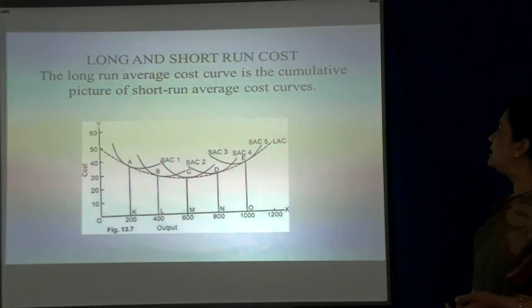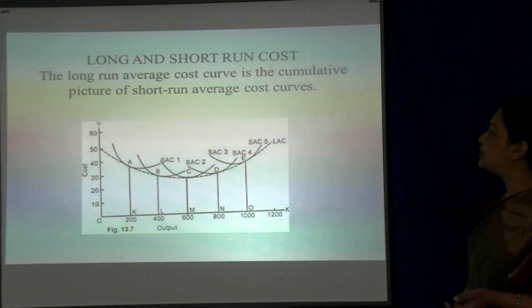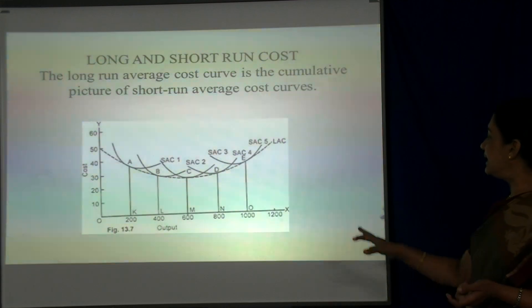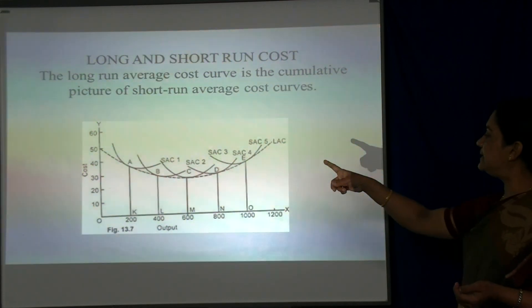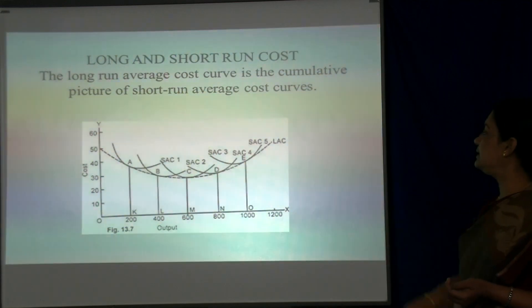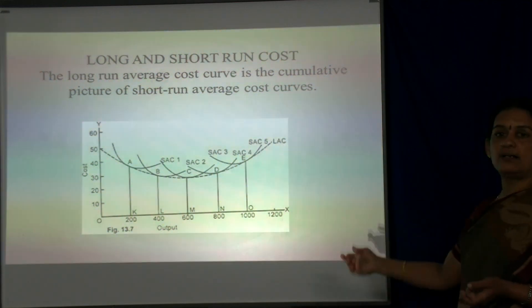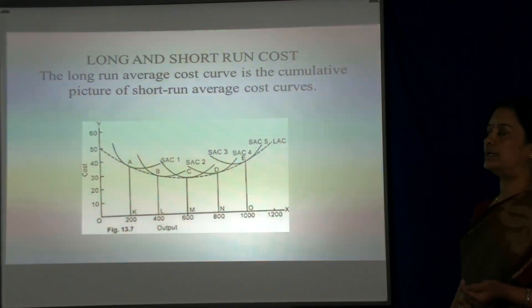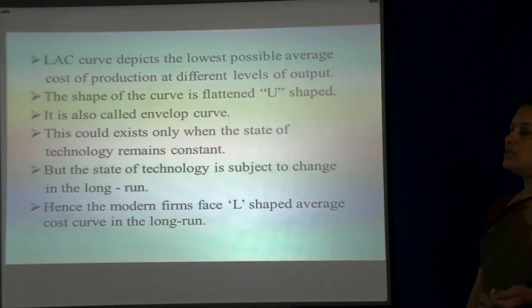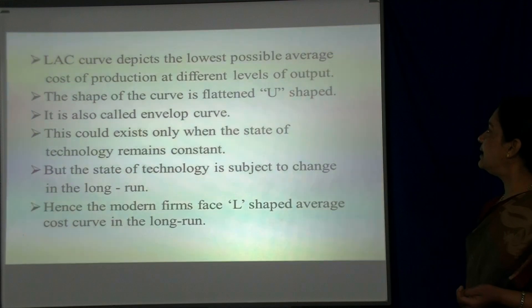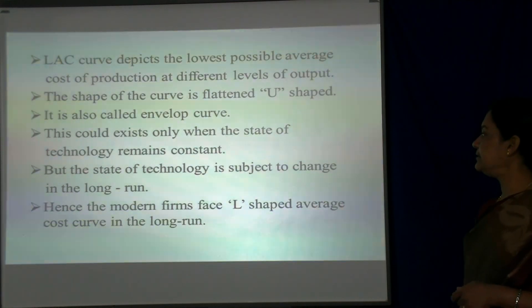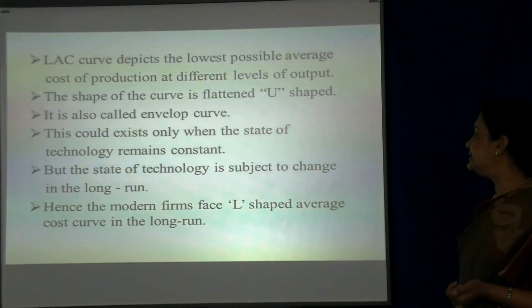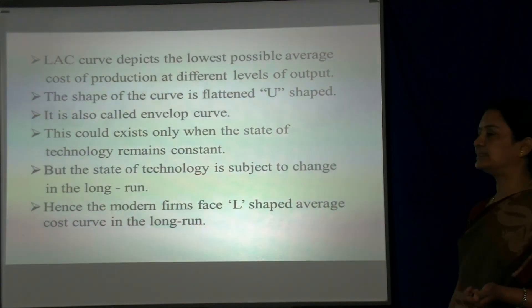This diagram shows the long-run and short-run cost curves. The long-run average cost curve is the cumulative picture of all the short-run average cost curves. The X-axis represents output and the Y-axis represents cost. LAC is the long-run average cost curve, and SAC1, SAC2, SAC3, SAC4 and SAC5 are the short-run cost curves. The shape of the long-run average cost curve is a flattened U-shaped curve, also called the envelope curve. It depicts the lowest possible average cost of production at different levels of output, and exists only when the state of technology remains constant. Since technology is subject to change in the long run, modern firms face an L-shaped average cost curve in the long run.